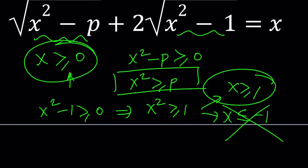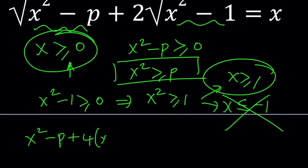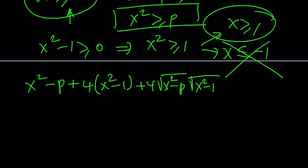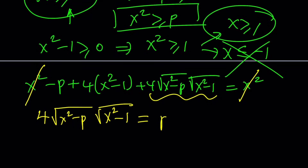Under those conditions, let's square both sides. We get x squared minus p, plus four times (x squared minus one), plus four times the square root of (x squared minus p) times the square root of (x squared minus one), equal to x squared. The x squared terms cancel out. Isolating the radical expression on the left, we get: four times √(x²−p)·√(x²−1) = p + 4 − 4x².